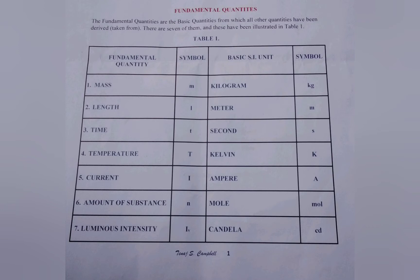Now if you take a keen look at the table you will see that it starts with mass. Then there's length, time, temperature, current, amount of substance and luminous intensity. All of these are the seven fundamental quantities.